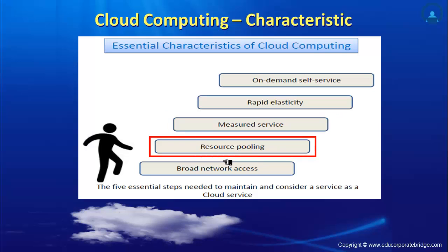Next is resource pooling: in a server, two groups — say the sales team and the accounts team — keep their data. If one day the sales team needs more space because new brochures are being published, while the accounts team doesn't need all their allocated space, in cloud technology you can rapidly reduce and reallocate unused resources from one group to another. This makes effective use of resources very easy, which is why we call it resource pooling.